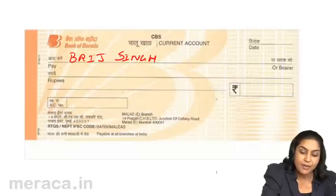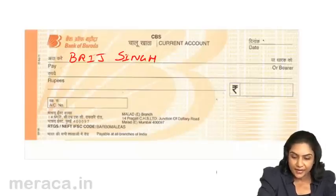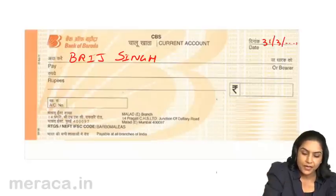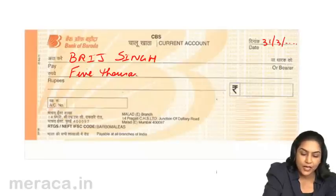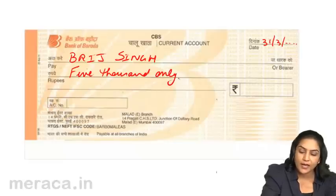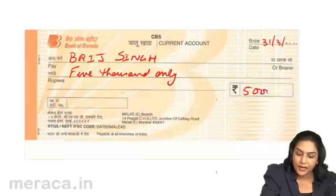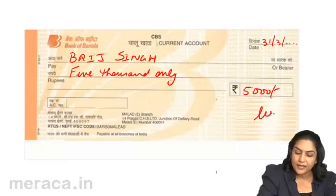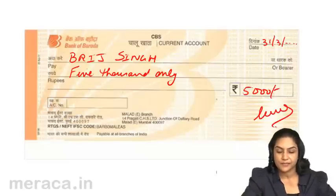We fill in the name of the beneficiary or the payee, the date, and an amount — let us say rupees 5000 only — and then there is a signature. This is a bearer cheque.